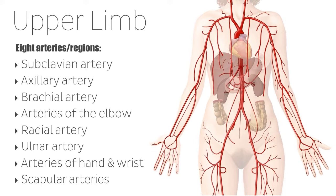We have quite a few arteries located in the upper limb, and because there are so many, we're not going to go into detail about what each artery supplies. Rather, we're just going to focus on describing their path and naming their branches, of which there are quite a few. So if you get lost, feel free to come back to this image and reorient yourself to where you are in the upper limb. But to kick things off, let's begin by looking at the subclavian artery.